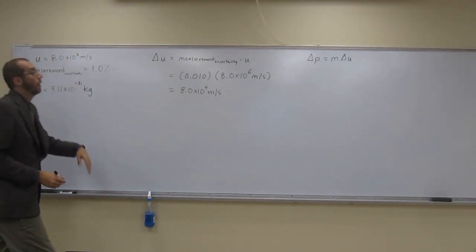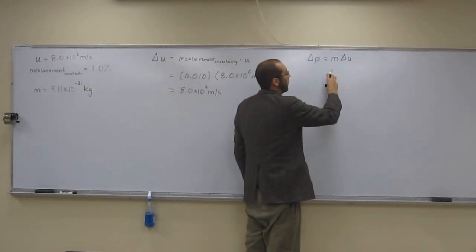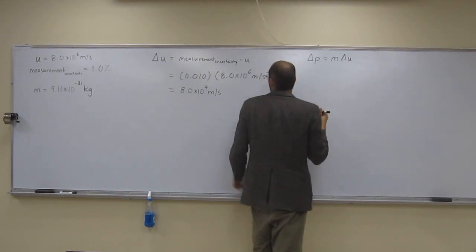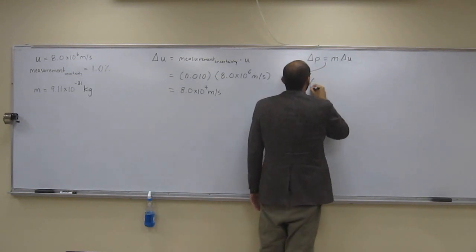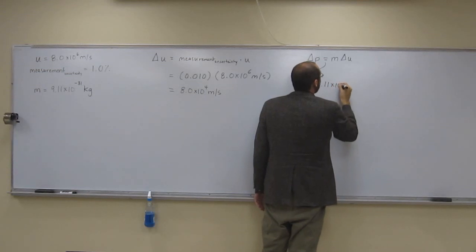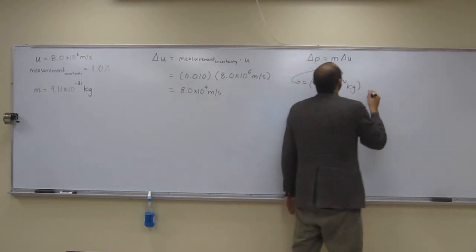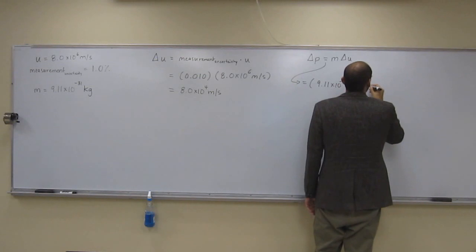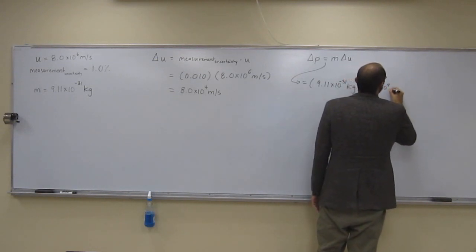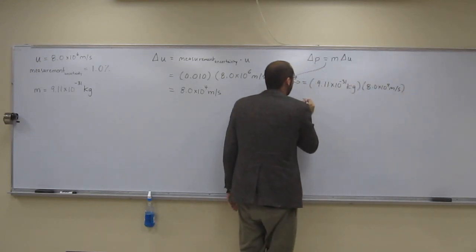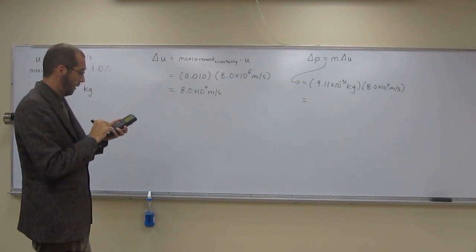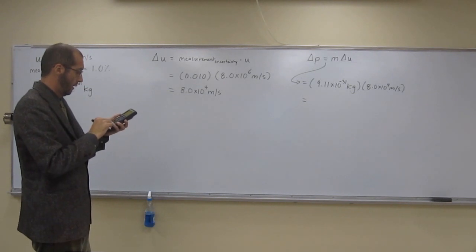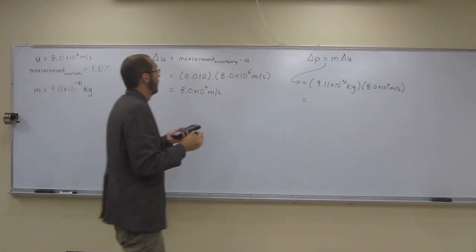So you've got the mass over here. And remember, momentum is going to be in kilograms meters per second. So those are good units, and those are the units that you're going to get. So the mass is 9.11 times 10 to the negative 31st kilograms. You have to have that in kilograms. Times 8.0 times 10 to the 4th meters per second. So let's figure out what that number is.